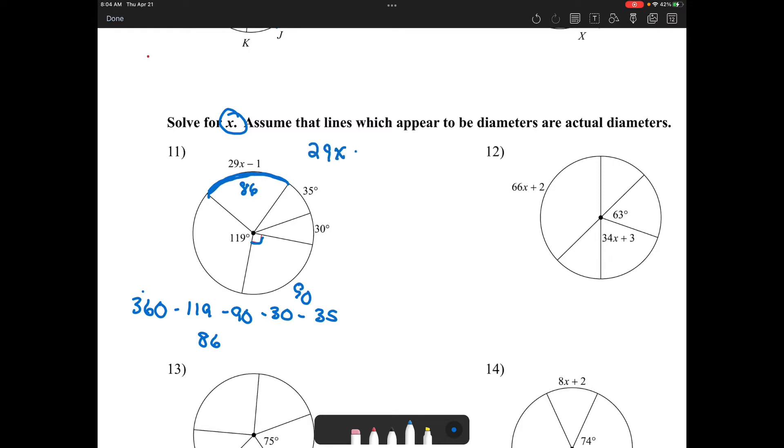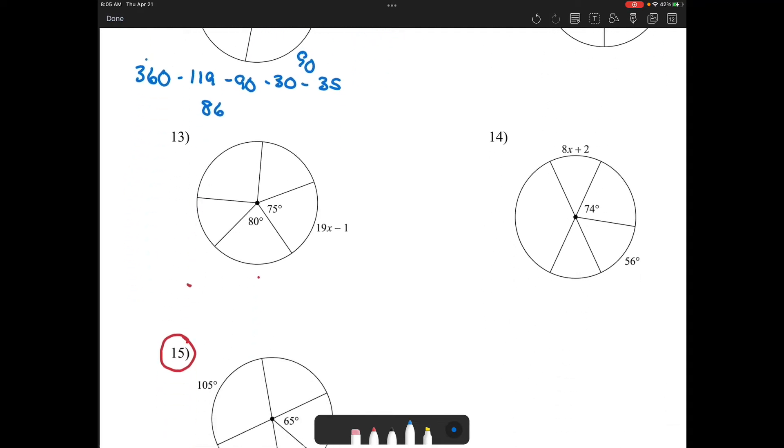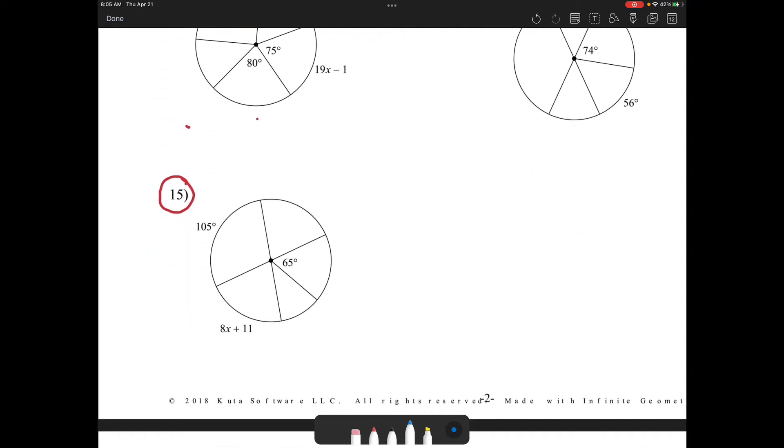So then we'd have 87 divided by 29, which is 3, so we get X is equal to 3. Okay, so you want to finish those up.